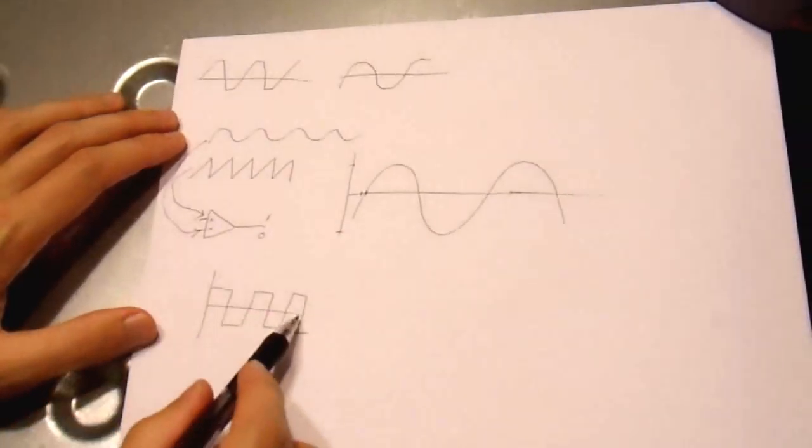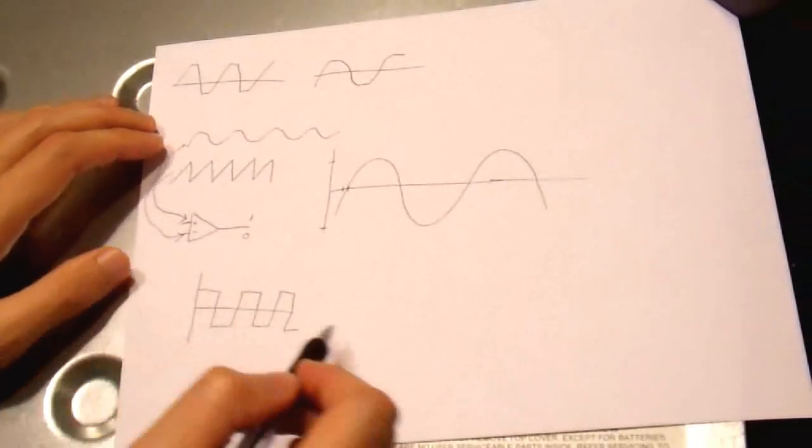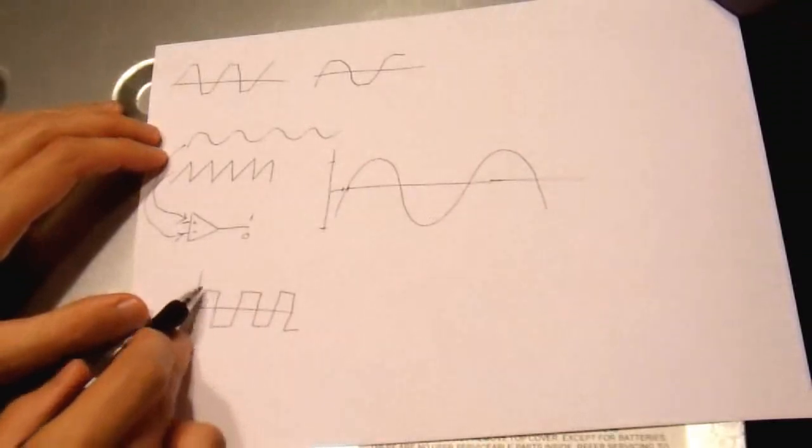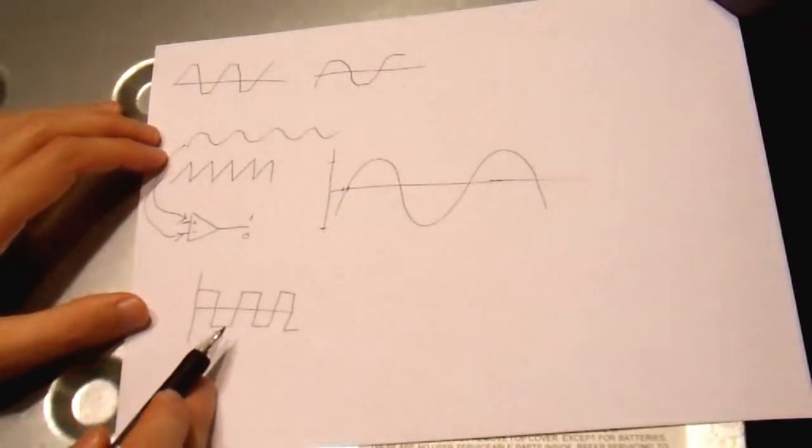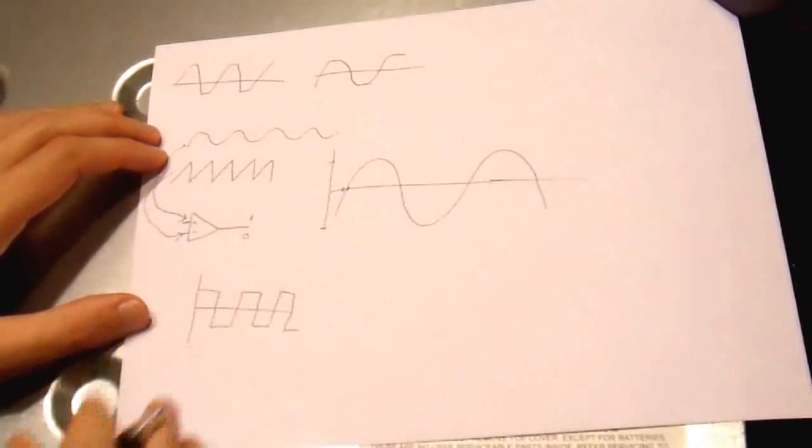And if you filter this through a low pass filter, you end up with a DC voltage of zero volts. Because it's half the time it's positive, half the time it's negative, it averages out to zero. And that's what this voltage here is. It's about zero volts.